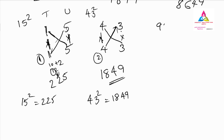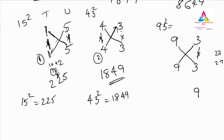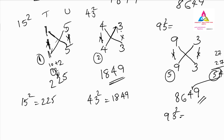Now let's do 93 squared using the same method. Write 9 and 3 twice, one below the other. First, 3 into 3 is 9. Next, 9 times 3 is 27 and 9 times 3 is 27; 27 plus 27 is 54. Write 4, carry 5. Then 9 times 9 is 81, plus carry 5 gives 86. So 93 squared is 8649.